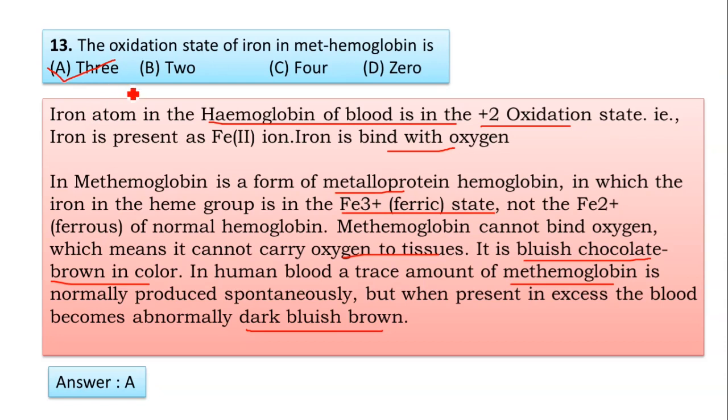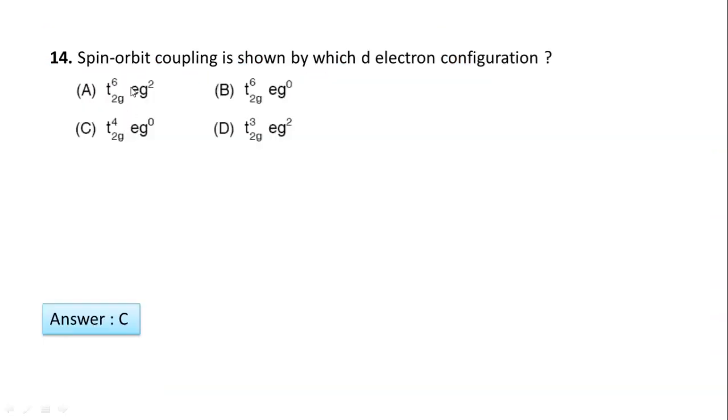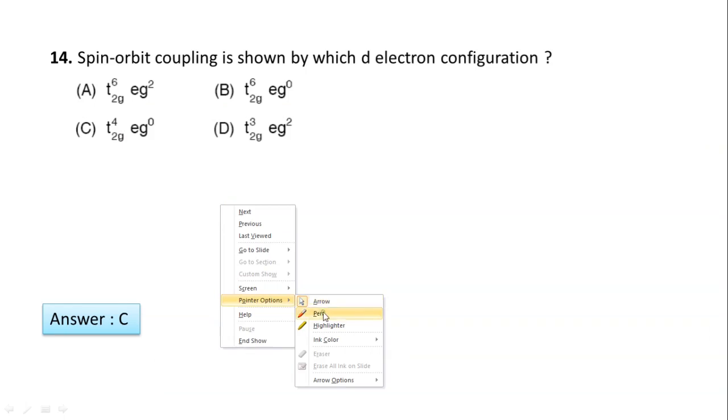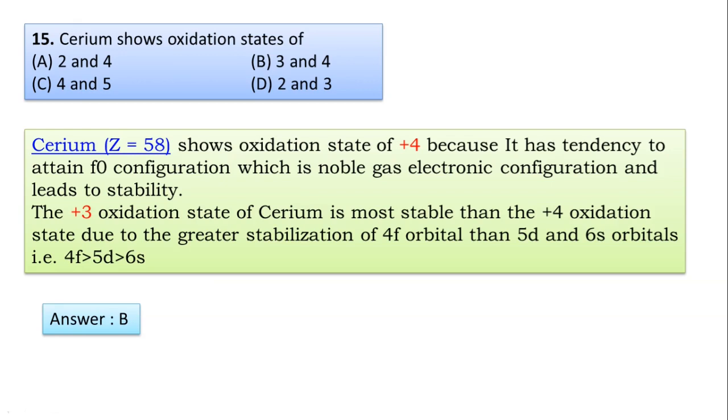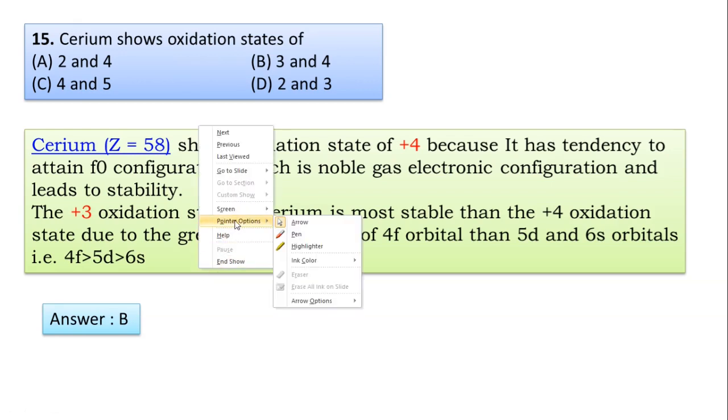Next question: Spin-orbit coupling shown by which d electron configuration? The answer is C, due to t₂g orbital, t₂g⁴ electron and eg is 0 electron. Answer is C.